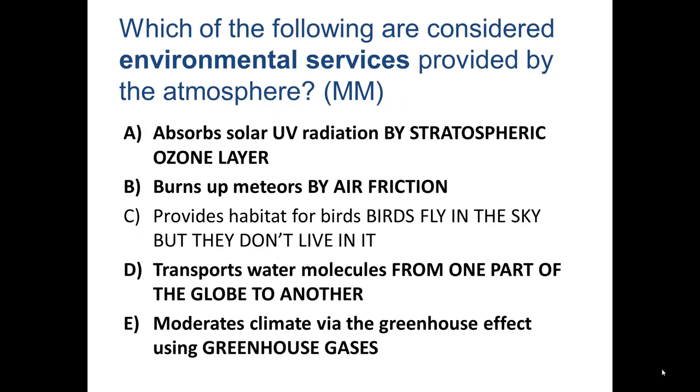The atmosphere absorbs UV radiation by the stratospheric ozone layer. Meteors are burned up by air friction. It transports water molecules from one part of the globe to another. And it moderates climate via the greenhouse effect using greenhouse gases. Without the greenhouse effect, it would get extremely cold at night as the heat would radiate out into space without being captured and re-emitted back to the surface.